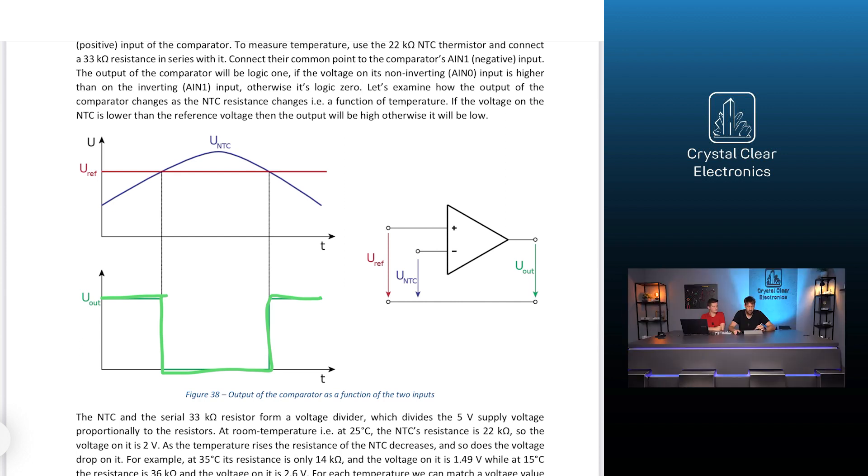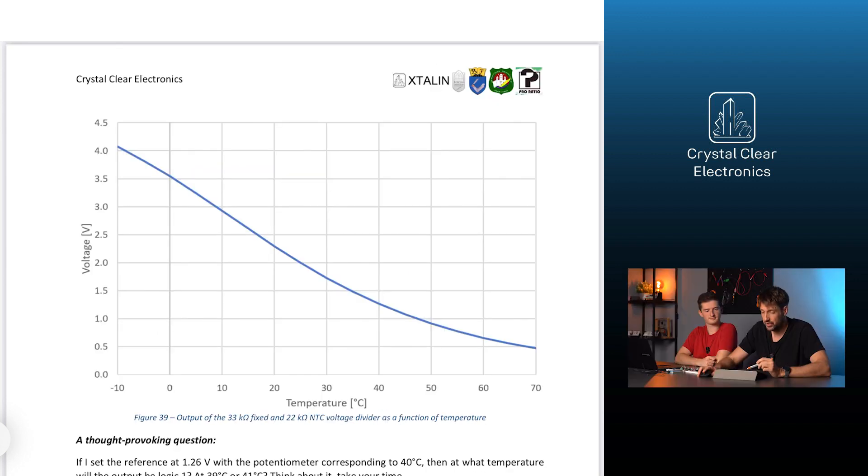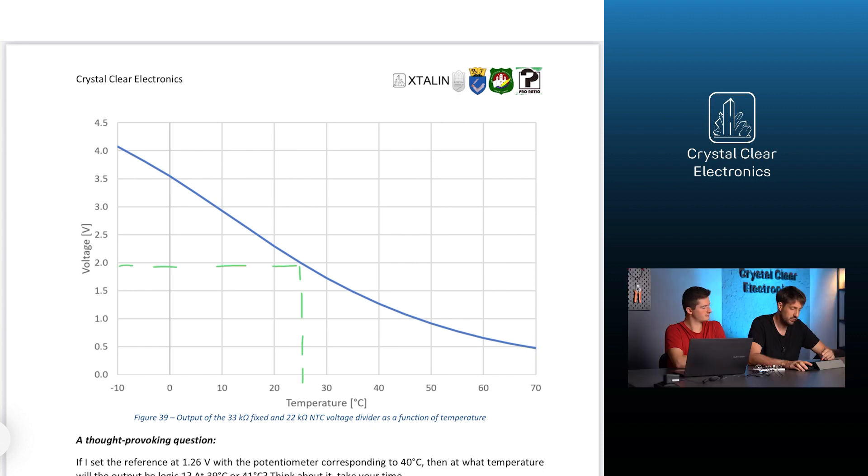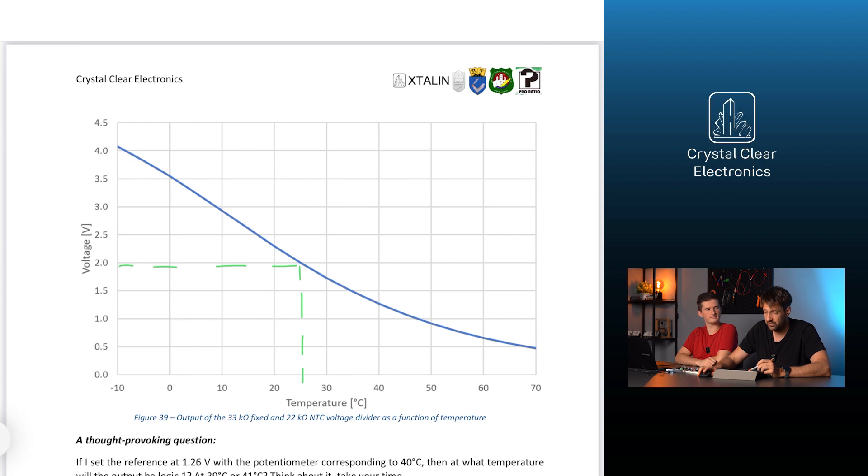The NTC and the serial 33 kilo ohm resistor form a voltage divider, which divides the 5 volts supply voltage proportionally to the resistor's value. At room temperature, that is at 25 degrees Celsius, the NTC's resistance is 22 kilo ohms, so the voltage on it is 2 volts. As the temperature rises, the resistance of the NTC decreases and so does the voltage drop on it.